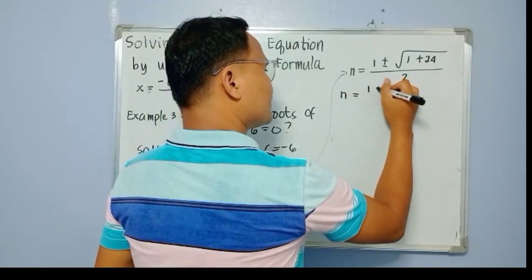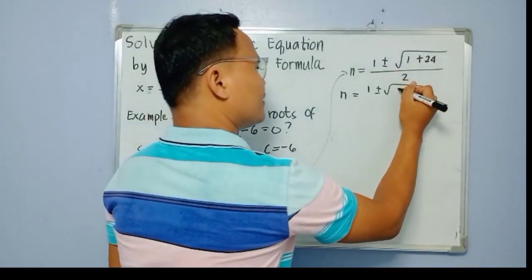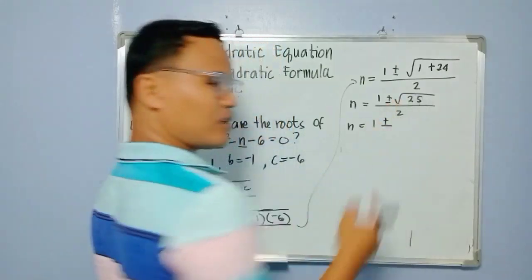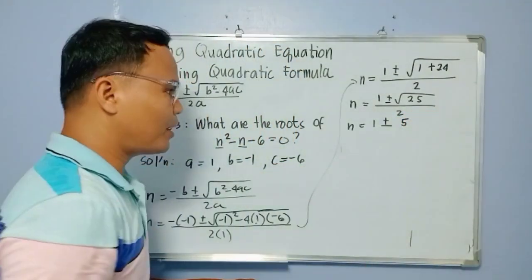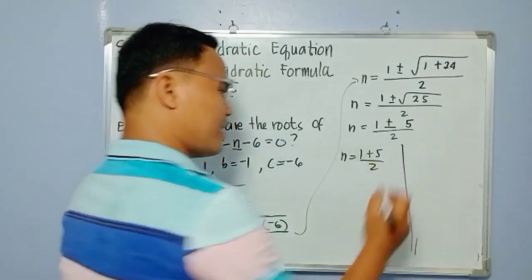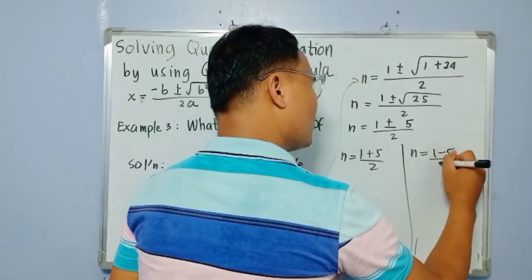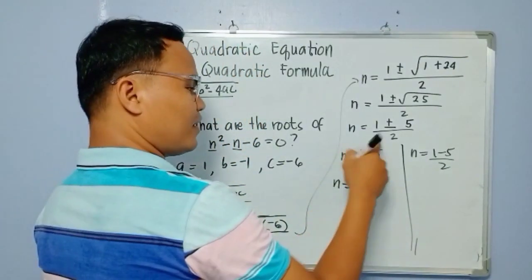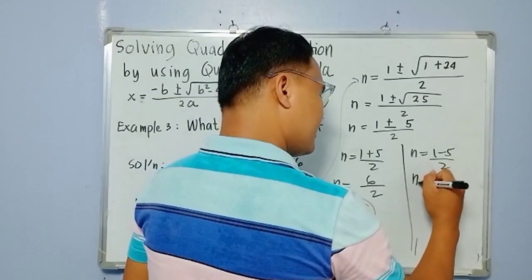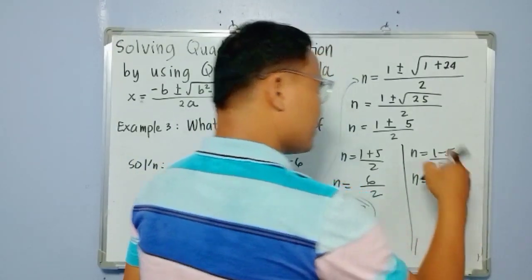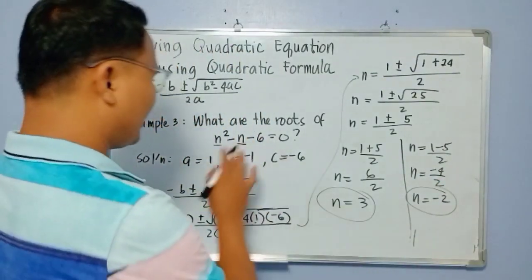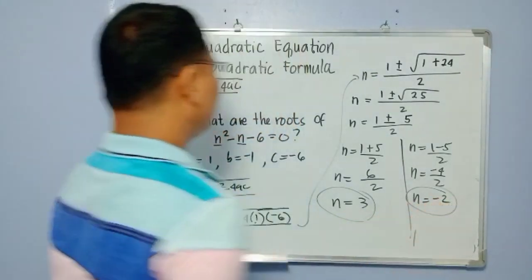So n equals 1 plus and minus the square root of 25, all over 2. The square root of 25 is 5, since 25 is a perfect square. Two values of n: n equals 1 plus 5 over 2, and n equals 1 minus 5 over 2. That gives 6 over 2 equals 3, and 1 minus 5 is negative 4 over 2 equals negative 2. The roots of n squared minus n minus 6 equals 0 are 3 and negative 2.